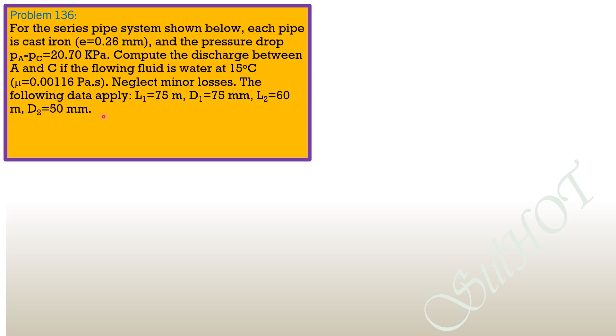The following data apply: length of pipe 1 is 75 meters, diameter of pipe 1 is 75 mm, length of pipe 2 is 60 meters, diameter of pipe 2 is 50 mm.